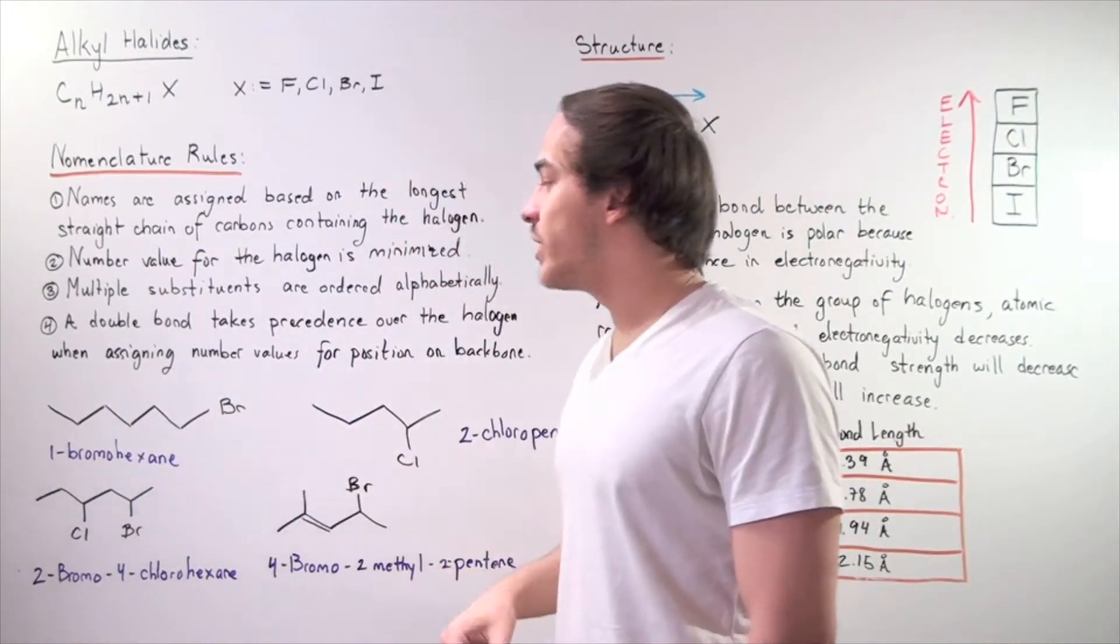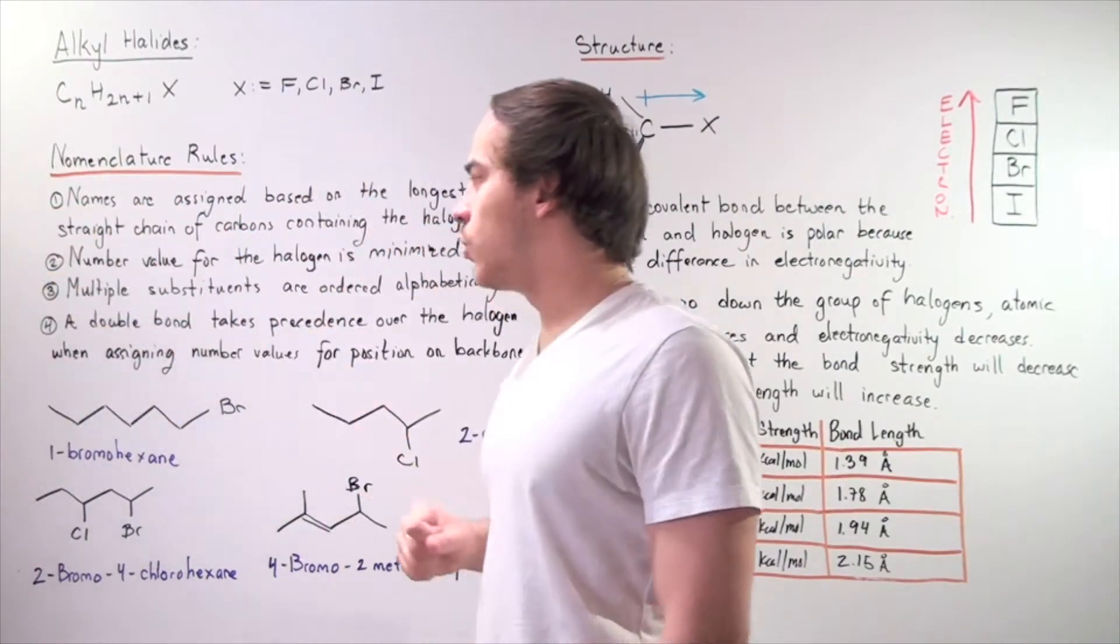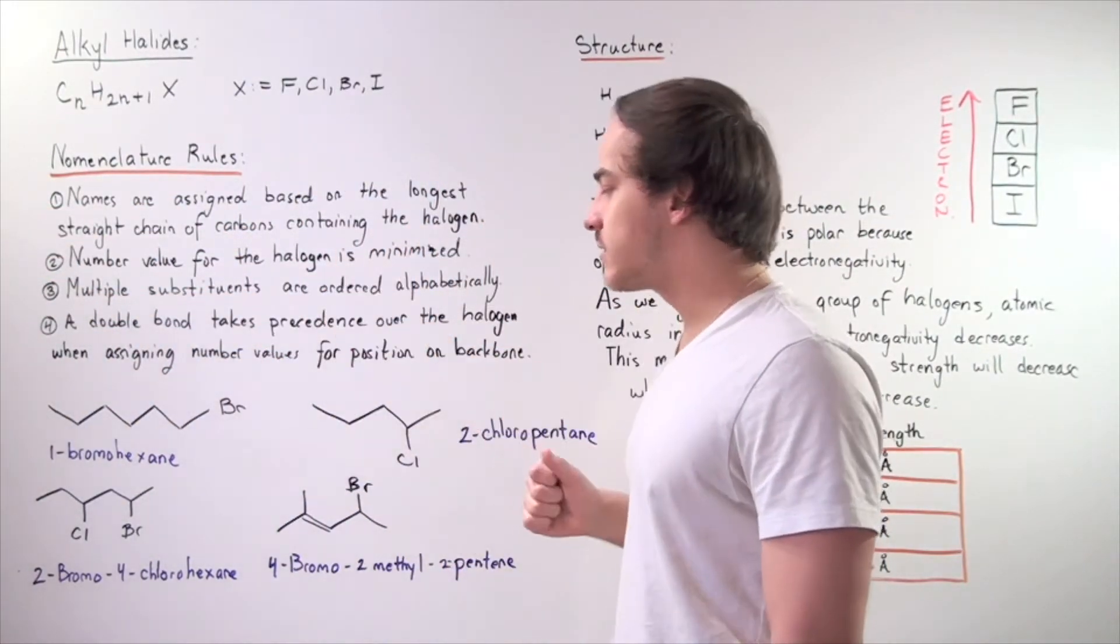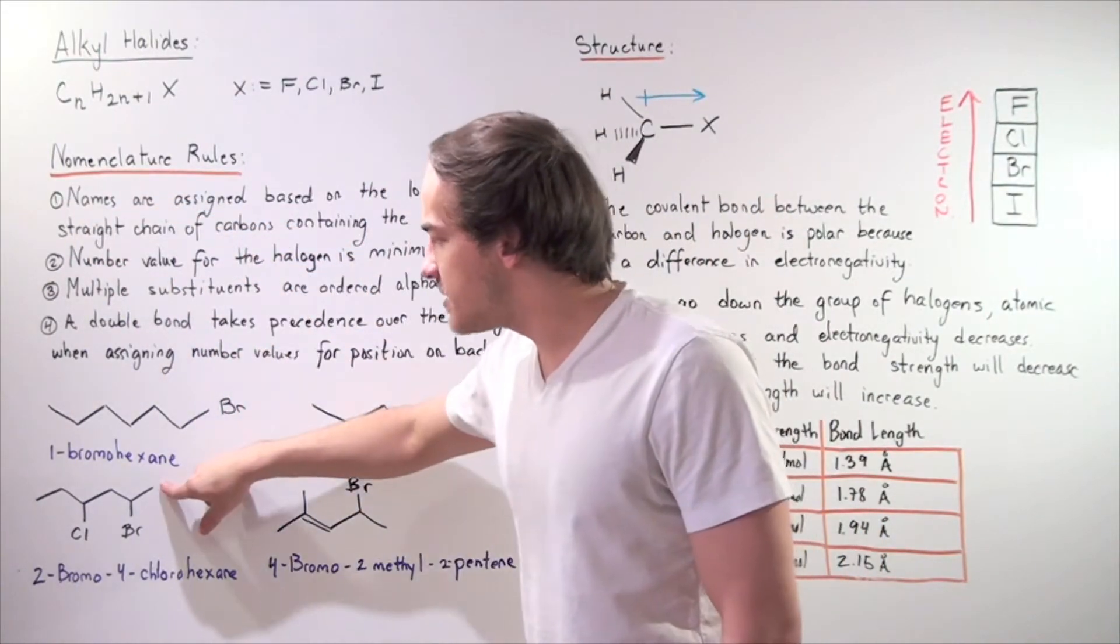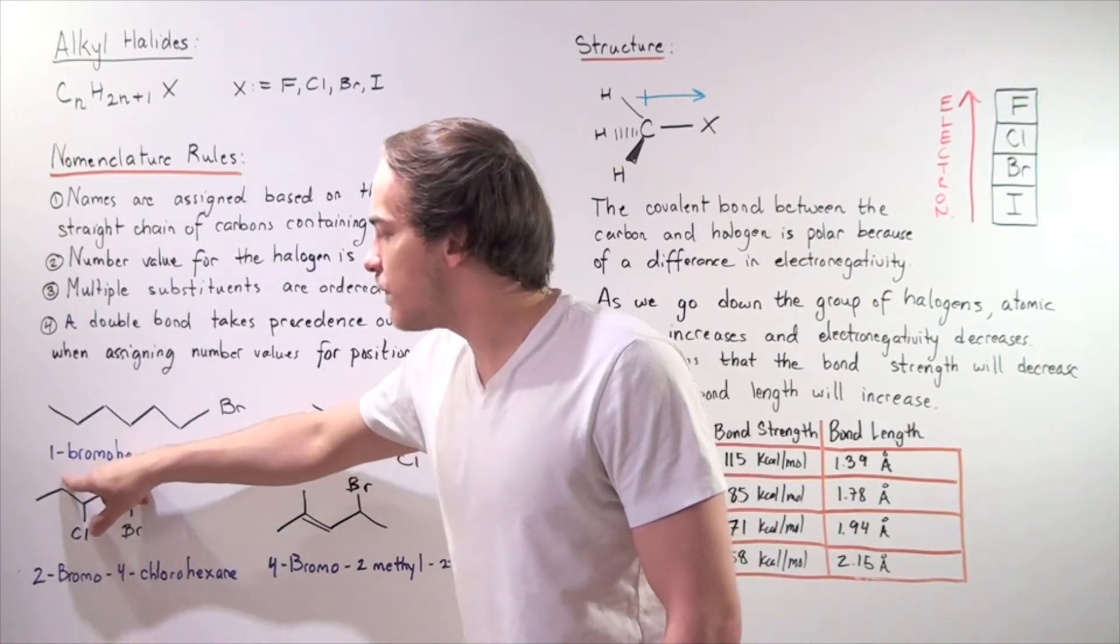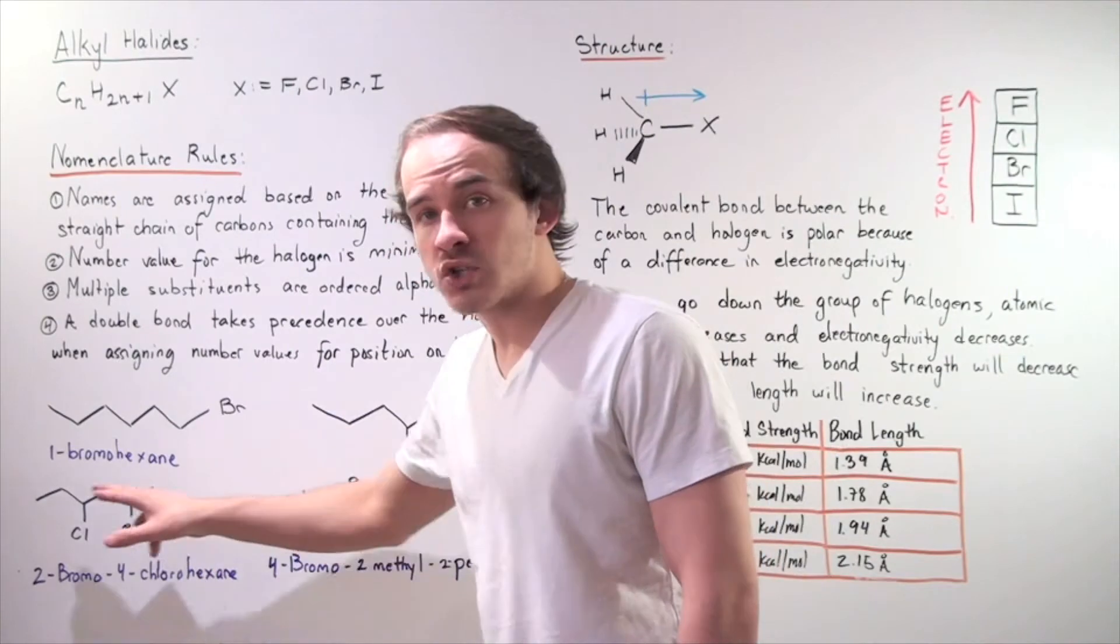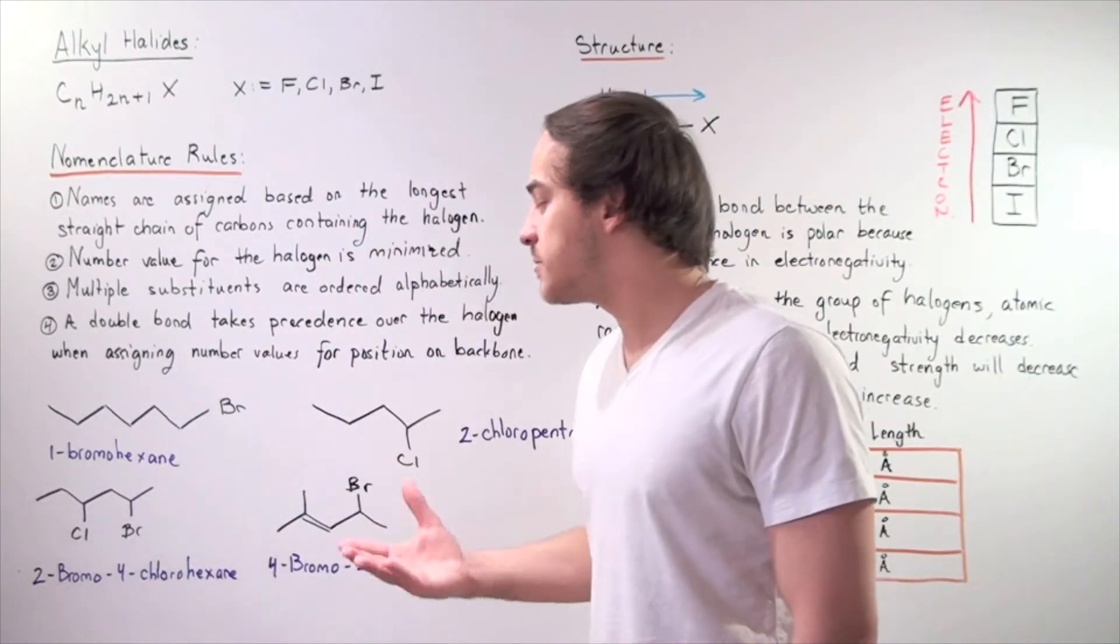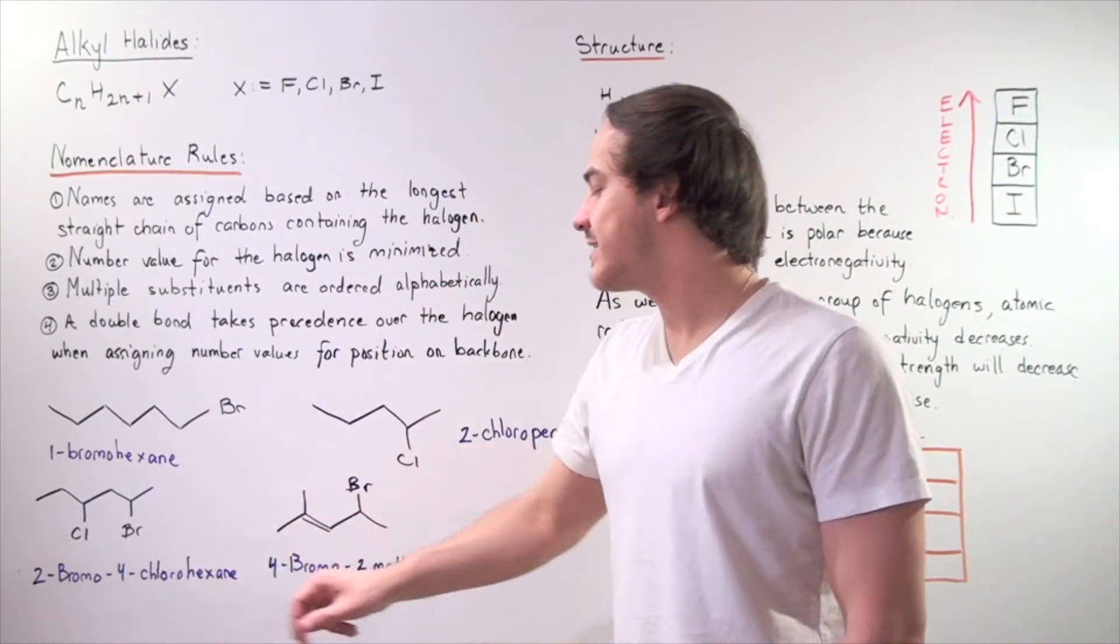Example three. Now we're taking into consideration the first three rules. Multiple substituents are ordered alphabetically. Because of rule two, we start from this end: one, two, three, four, five, six, so that gives us a hexane. We have an alkane, six carbon alkane. And bromo comes before chloro, so two bromo, four chlorohexane.